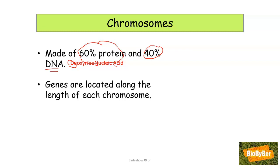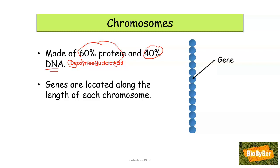Genes are located along the length of each chromosome. For the purposes of this video and to understand the concept, we are going to imagine that chromosomes are rather like pearl necklaces, and the pearls on the necklace represent the genes. This is rather a simple picture, and as time goes on we will learn the full structure of a chromosome.